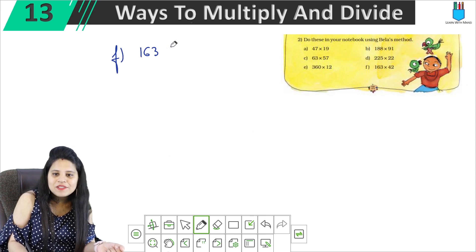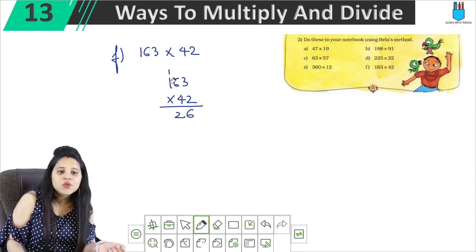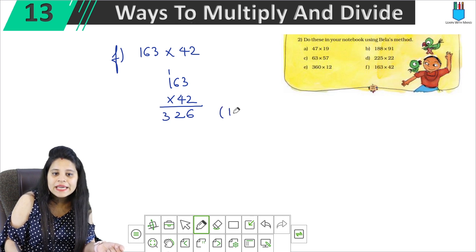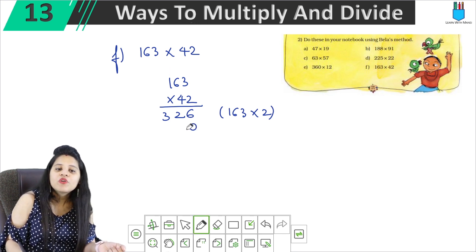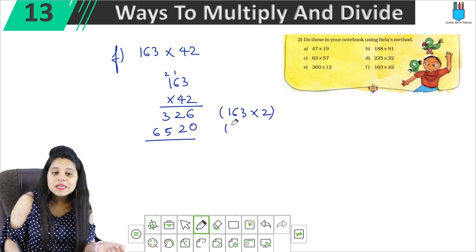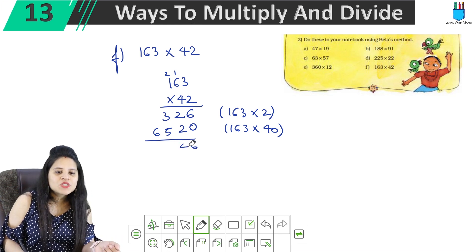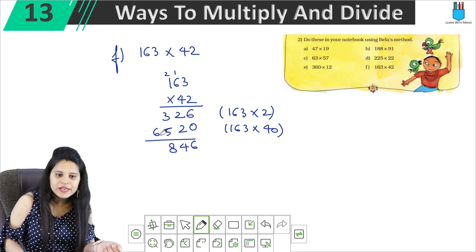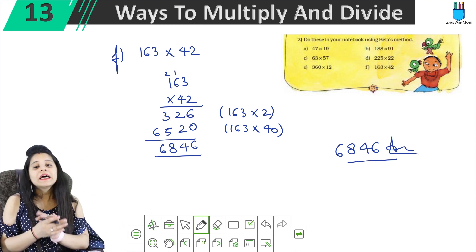Part F: multiply 163 × 42. So: 2 into 3 is 6, 2 into 6 is 12, carry 1. 2 into 1 is 2, plus 1 is 3. We have multiplied 163 by 2. Now write 0, 4 into 3 is 12, carry 1. 4 into 6 is 24, plus 1 is 25, carry 2. 4 into 1 is 4, plus 2 is 6. Adding the rows: 6 plus 0 is 6, 2 plus 2 is 4. The answer is 6846.